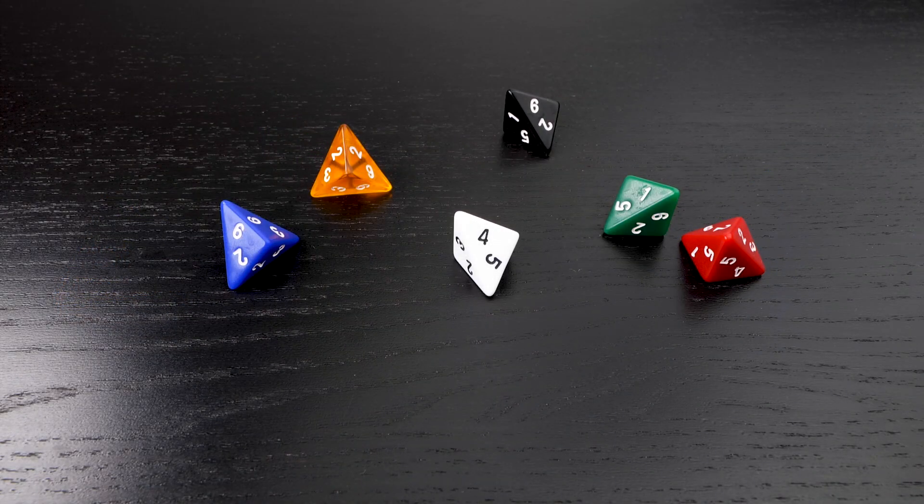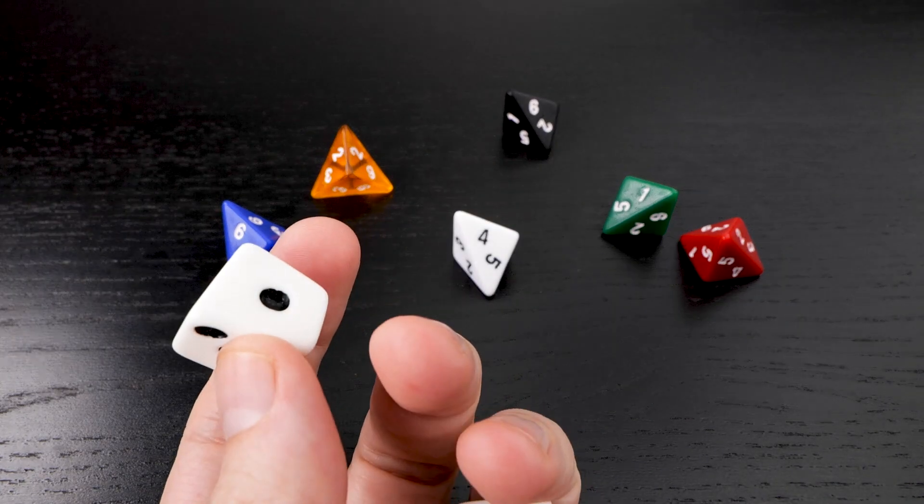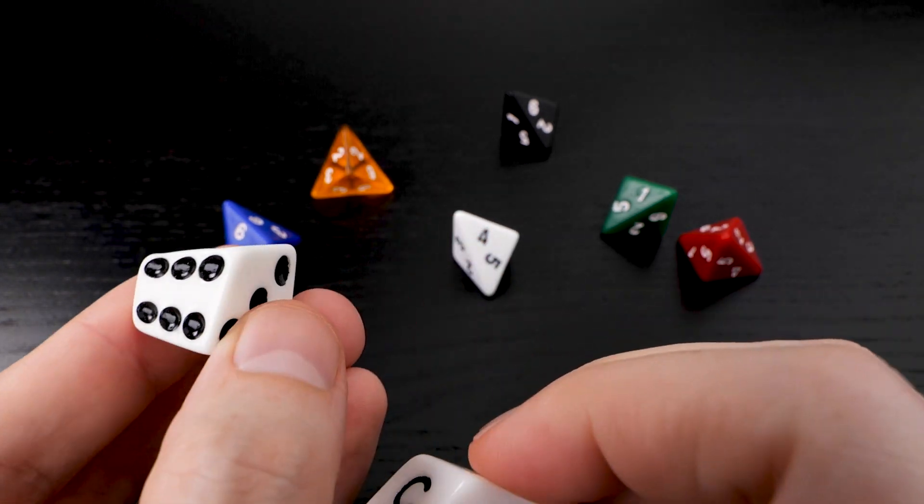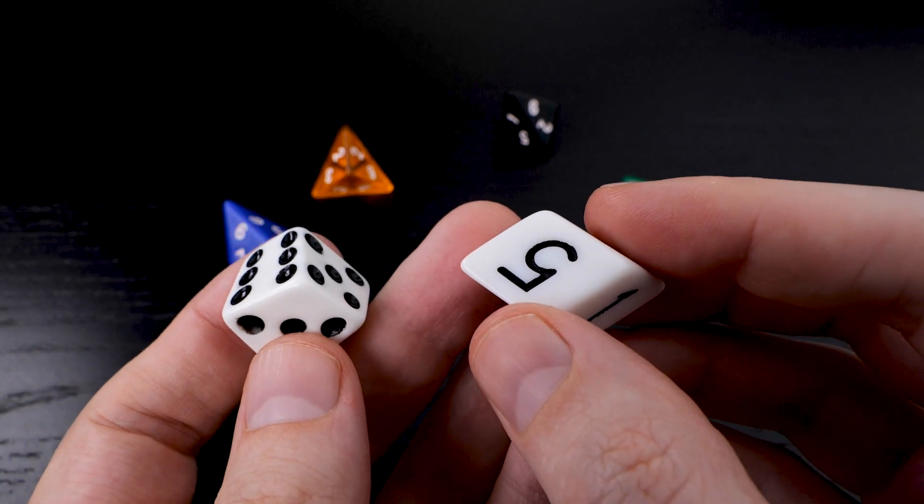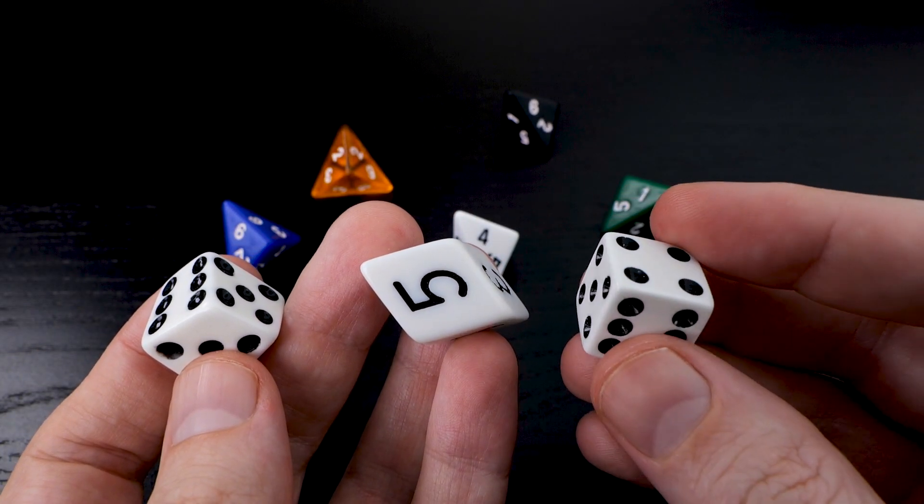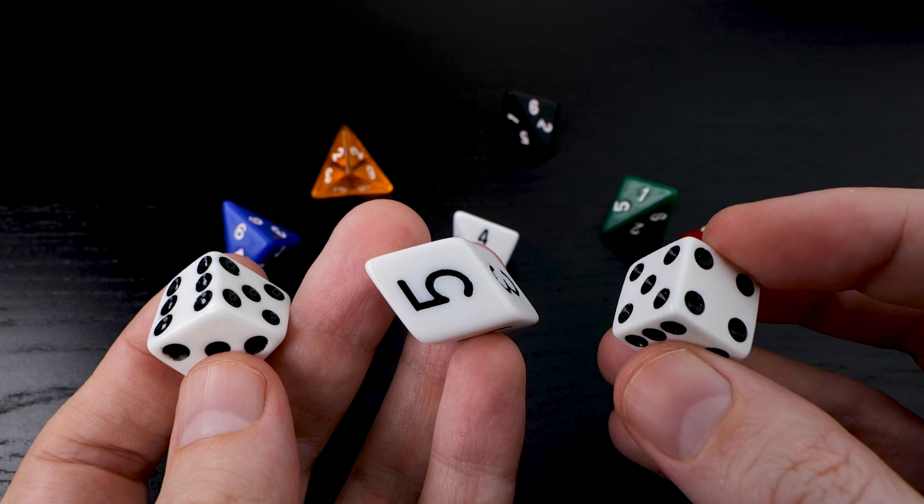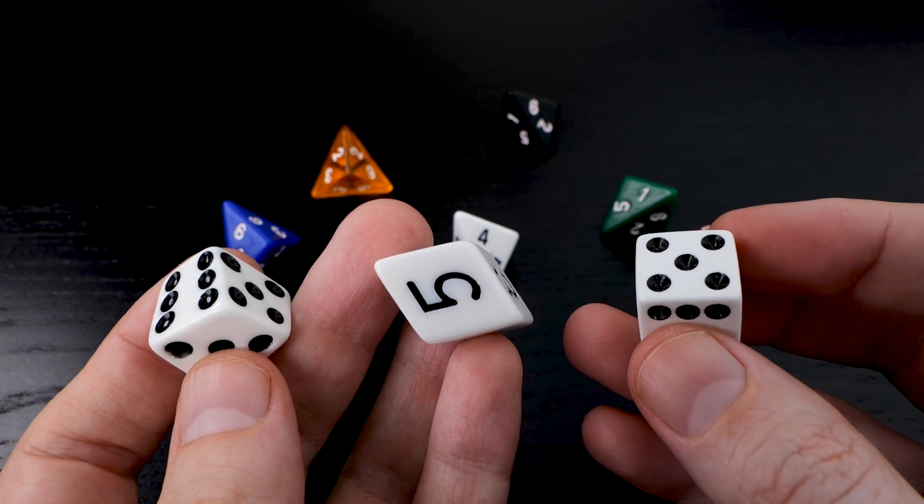Here at the Dice Lab we've explored a couple of different unusual shapes for the D6. First the skew D6 and then the slant D6. These are both fair shapes and of course they're not the same as the usual cube shape, but they're not that different from it. They're really both distortions of the cube.